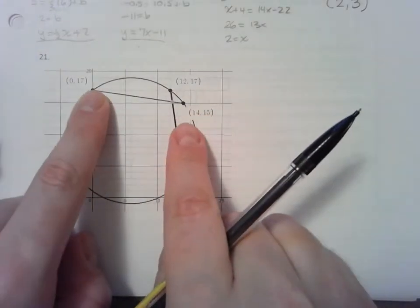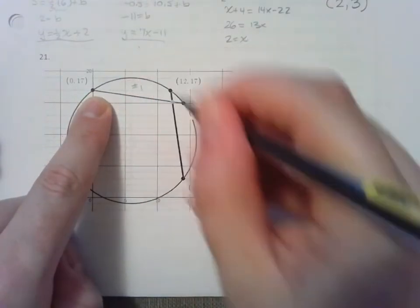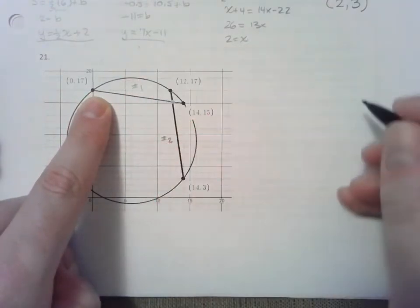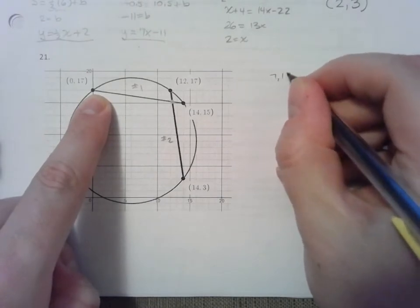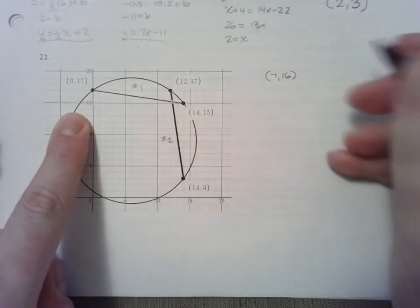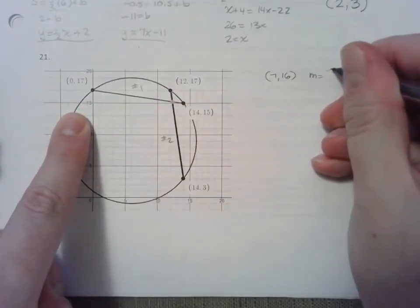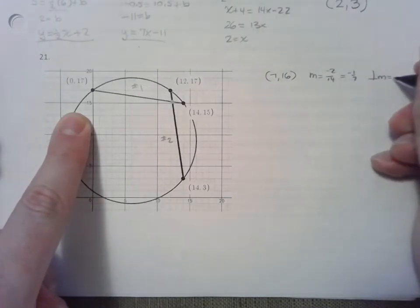Let's find the midpoint. So I'll call this chord number 1, I'll call this chord number 2. The midpoint of chord 1 would be (7, 16). The slope goes down 2 and right 14. Down 2 and right 14 is negative 1 7th. So the perpendicular slope would be 7.